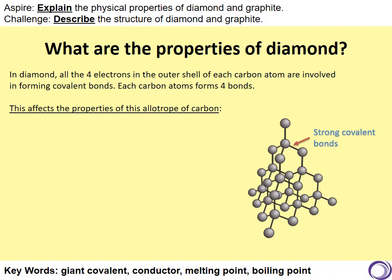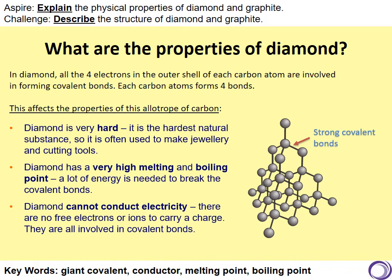So what are the properties of diamond? If we look at the diagram we can see that all four electrons in the outer shell of the carbon are involved in bonding, because each carbon atom forms four single covalent bonds. This affects the properties of this type of carbon. Diamond is very hard — it's the hardest natural substance — and this means we often use it for things like jewellery and cutting tools. Diamond has an incredibly high melting and boiling point because it needs lots of energy to break the many strong covalent bonds. And because all of the electrons in the outer shell of the carbon are involved in bonding, there are no free electrons, so diamond cannot conduct electricity.